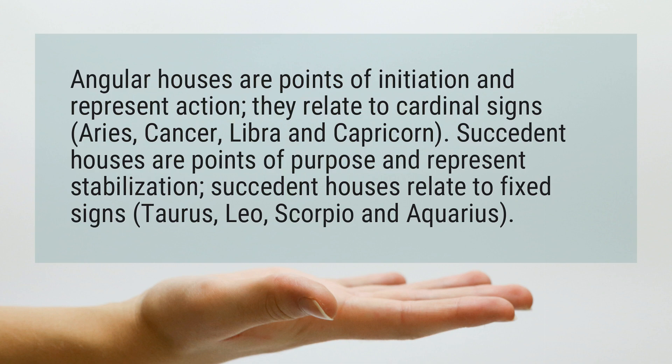Succedent Houses are points of purpose and represent stabilization. Succedent houses relate to fixed signs: Taurus, Leo, Scorpio, and Aquarius.